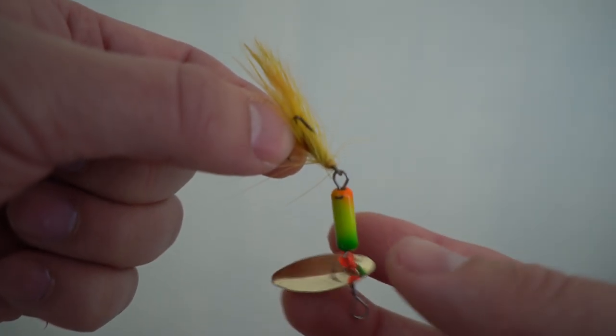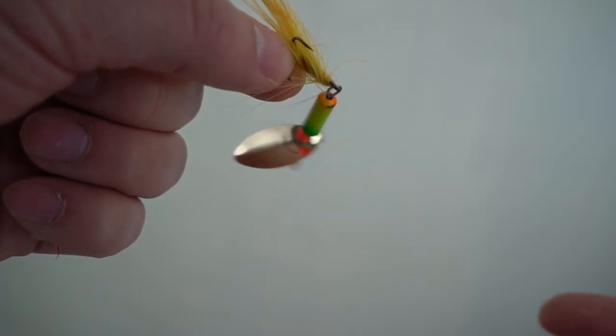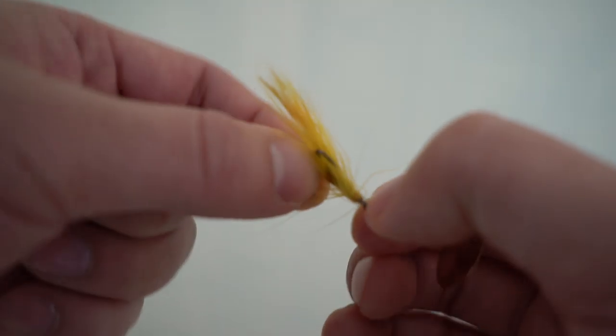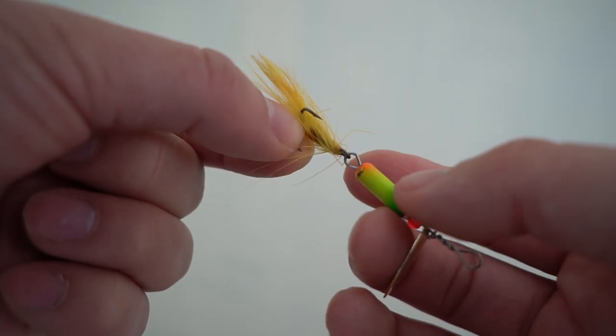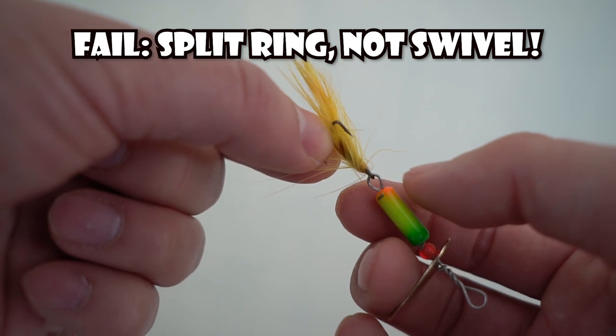So two things you could do, which the first one I won't get into within this video. But you can just cut off this hook right here with some wire cutter pliers, put a swivel, and you add your next hook and you're good to go. That's the easy way.